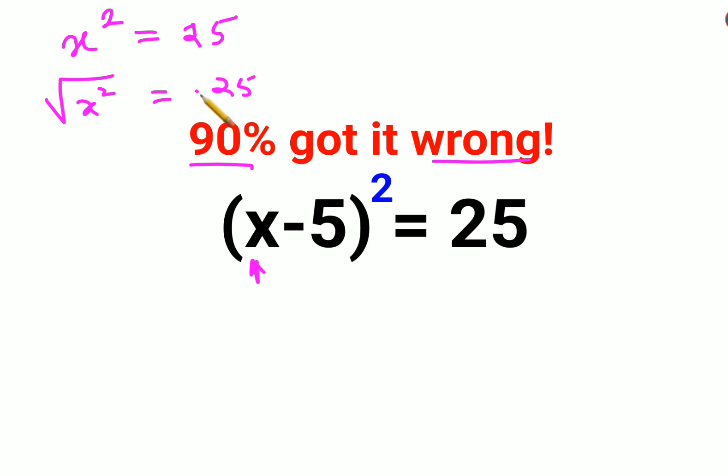But please understand, whenever I take a square root, especially if this is equal to a variable, at that time I have to put a plus/minus sign.